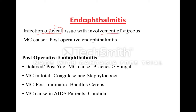Endothalmitis involves the uveal tissue with involvement of the vitreous. The most common cause of endothalmitis is post-operative endothalmitis — meaning if a patient has undergone an intraocular surgery like trabeculectomy or, most commonly, cataract surgery, and after that gets an infection in the vitreous cavity, that is called endothalmitis. The most common causative organism is Staph aureus.